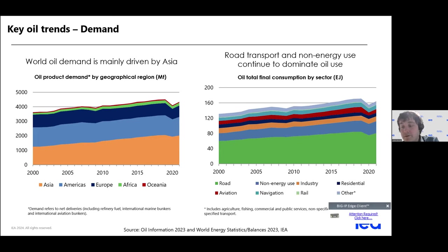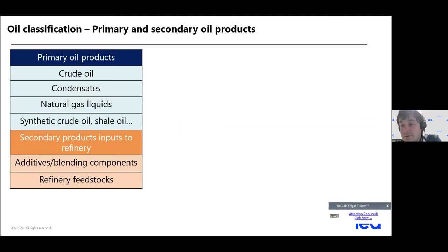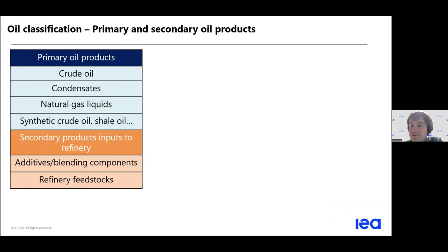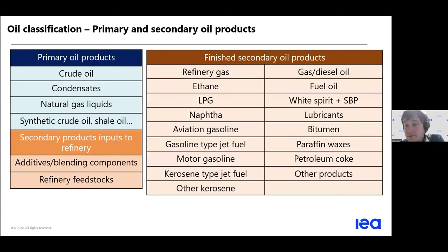Now let's dig a bit deeper into the main concepts we are dealing with when talking about oil. The first concept is the difference between primary and secondary products. The main primary product is crude oil, the oil directly extracted from the earth. We also have condensates, which are kinds of gases and liquids assimilated with oil. We also have secondary products which are assimilated as primary products because they go back to the refineries — we call these feedstocks — which are secondary products inputted into refining again.